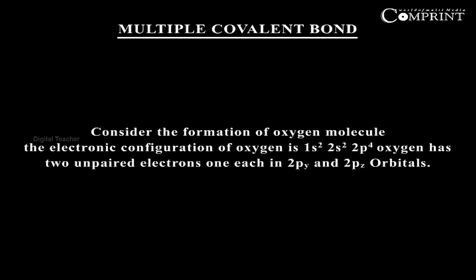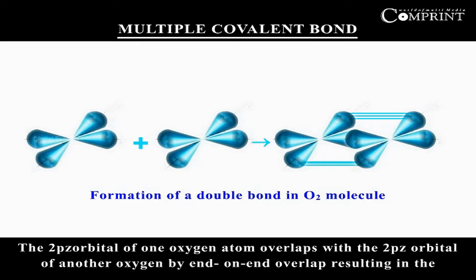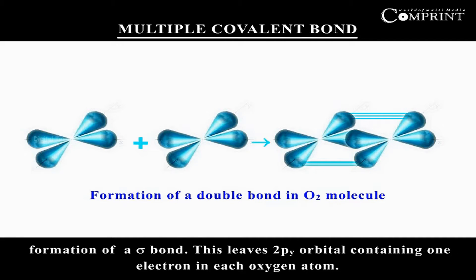Oxygen has two unpaired electrons, one each in 2py and 2pz orbitals. The 2pz orbital of one oxygen atom overlaps with the 2pz orbital of another oxygen by end-on-end overlap, resulting in the formation of a sigma bond.